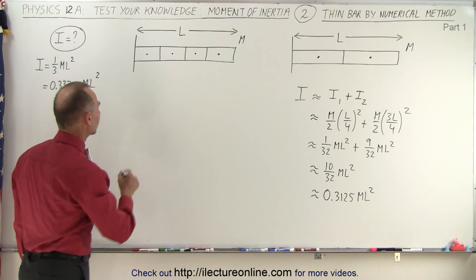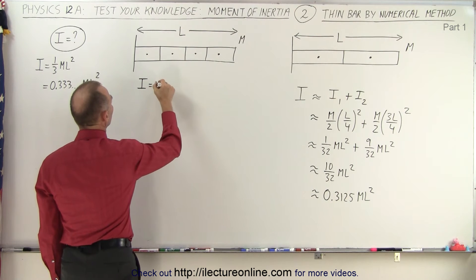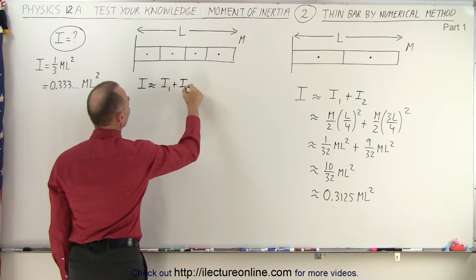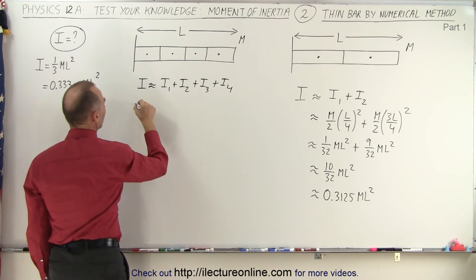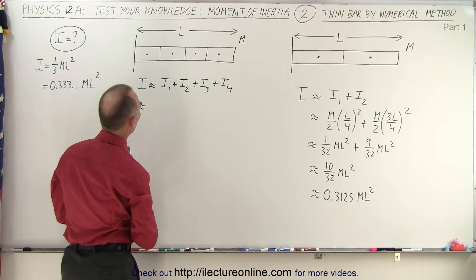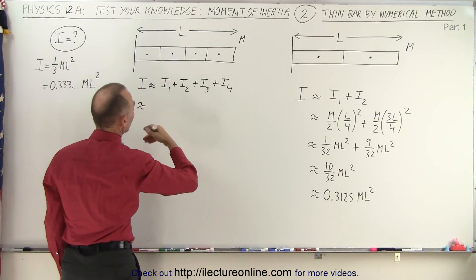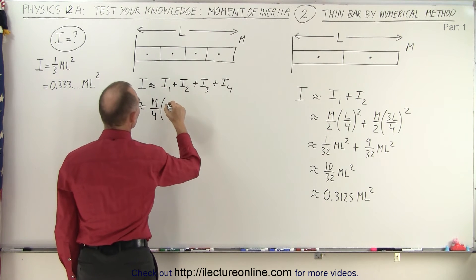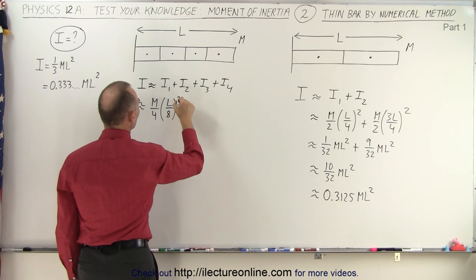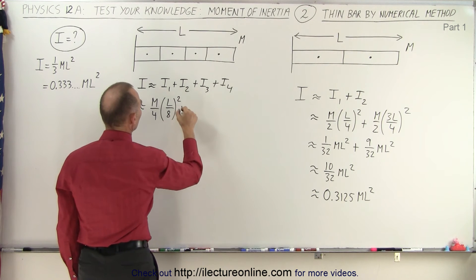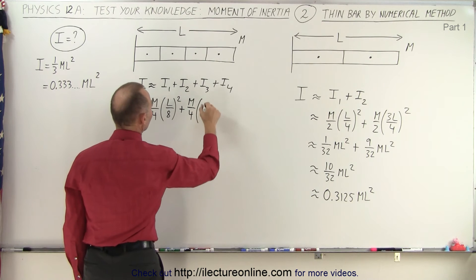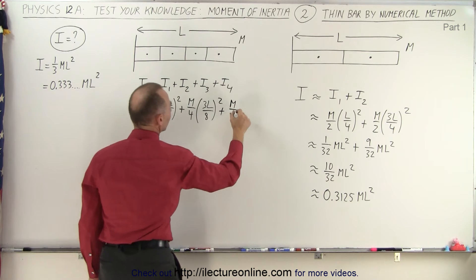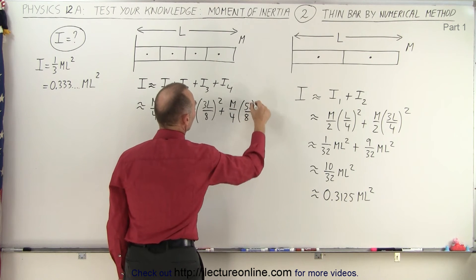Let's see how close we get when we use four sections. I would be approximately equal to the sum of the moment of inertia of the four individual sections. The mass of each section would now be M/4. The first section: (M/4)(L/8) squared; plus (M/4)(3L/8) squared; plus (M/4)(5L/8) squared; plus (M/4)(7L/8) squared.